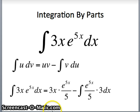Well, how is this going to work? We can simplify that by making it 3 fifths x e to the 5x. This 3 fifths is a constant that can come in front of the integral sign.